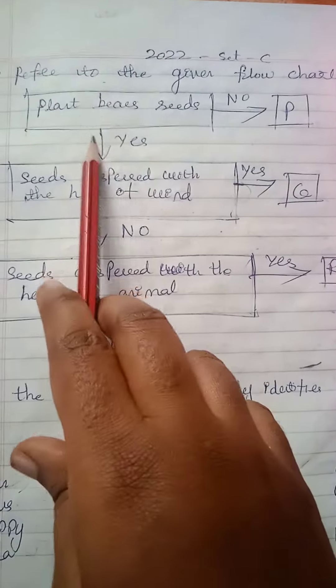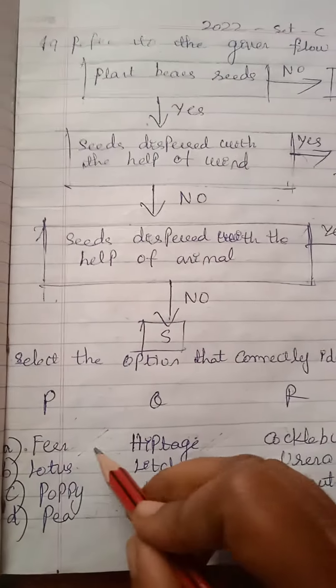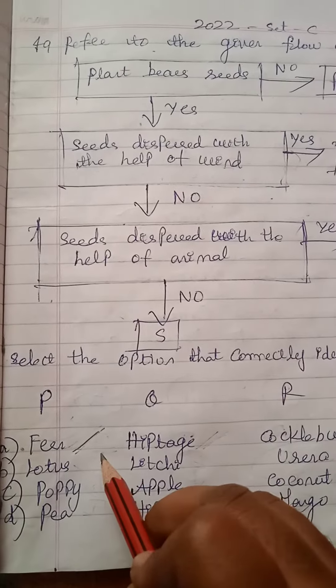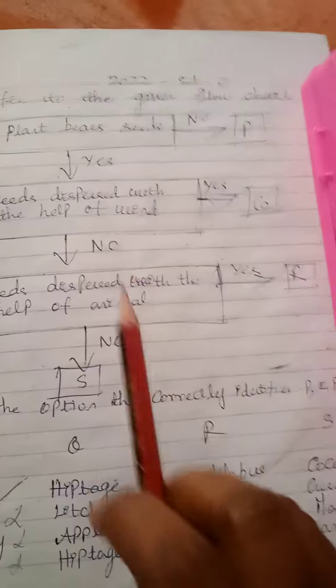Let's look into P. Plant bears seeds - no. Under P, fern is the only plant that does not bear seeds, and lotus, poppy and pea bear seeds so they will not come.